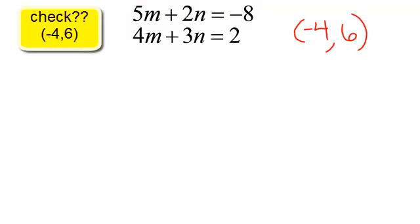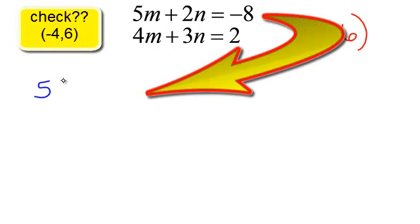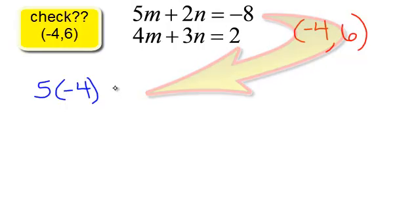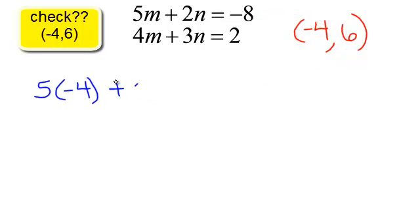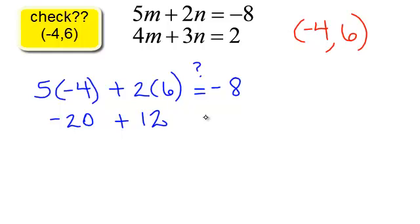We can check our answer. In the first equation, it would be 5 times negative 4 plus 2 times 6. And I am wondering, does that equal negative 8? 5 times negative 4, that would be negative 20, plus 2 times 6 is 12. Negative 20 plus 12, yes indeed, it is negative 8.